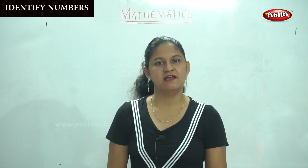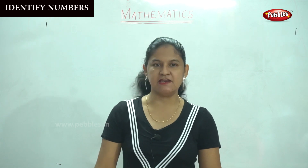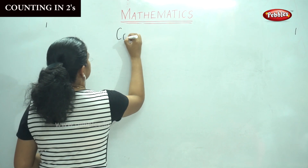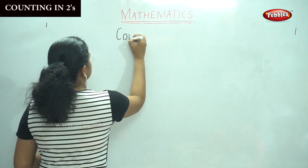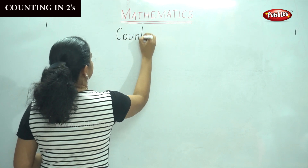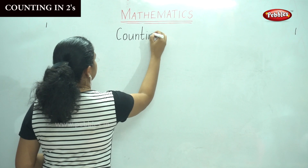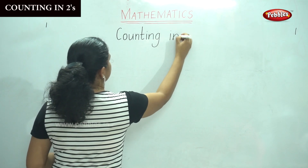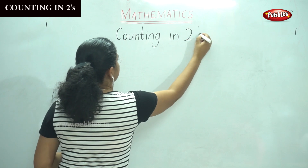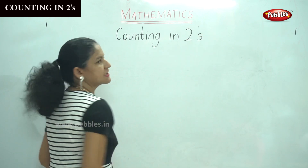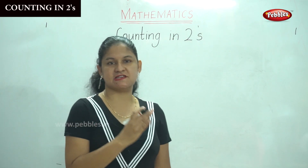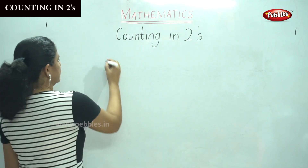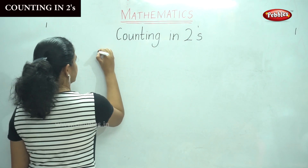So next we are going to see counting in twos. Counting in twos, we are going to see from 0 to 20. So we'll start with 0.